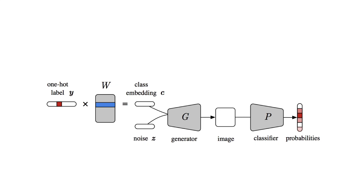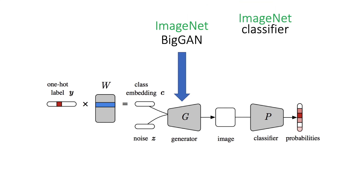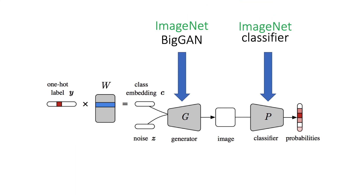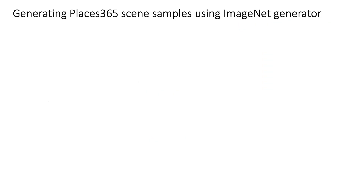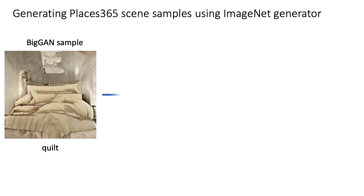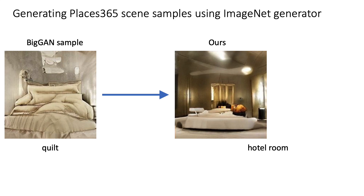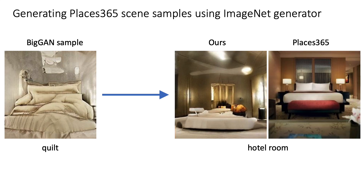The previous results were produced using a pre-trained ImageNet BigGAN and an ImageNet classifier, which interestingly can be swapped out with a classifier trained on a different dataset, like Places365. We can now turn an ImageNet sample like a quilt into a hotel room that has subtle touches of lighting and room arrangements similar to those in real hotel room photos, which the generator has remarkably never seen before.